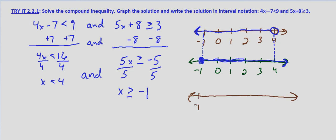And now we simply graph what's shared in common. So negative 1, 0, 1, 2, 3, 4.